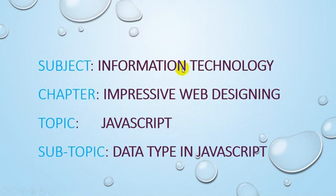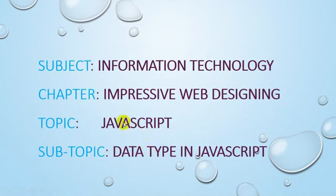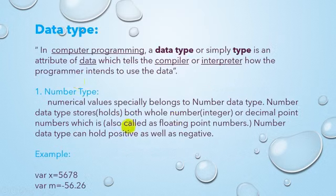So we are in our first chapter, impressive web designing, and our topic is JavaScript. In this we are learning data type in JavaScript. The type of information you are going to store can be of character, can be of date, can be of number - we have a number of types. In computer programming language, a data type or simply data is an attribute - attribute means it is an information, it is a feature.